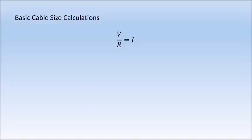Before we go into that, let's look over some basic cable size calculations. The formulas we're going to be using are: voltage divided by resistance gives us current, and power divided by voltage also gives us current. The reason I've picked these two out is that when we're selecting cable sizes, current is important. The current draw on that circuit is important — the higher the current draw, the more electrons are flowing within our conductor, and the higher the temperature gets within that conductor. Manufacturers specify current carrying capacity for their conductors or cables.